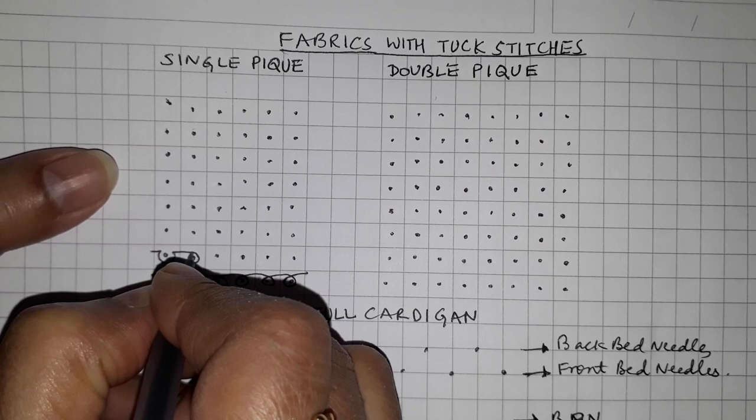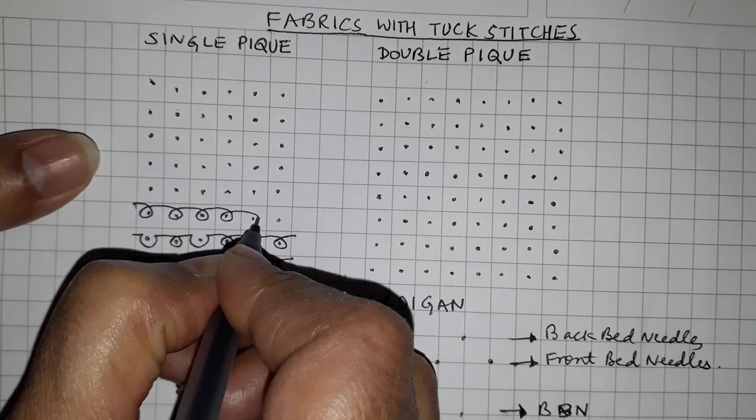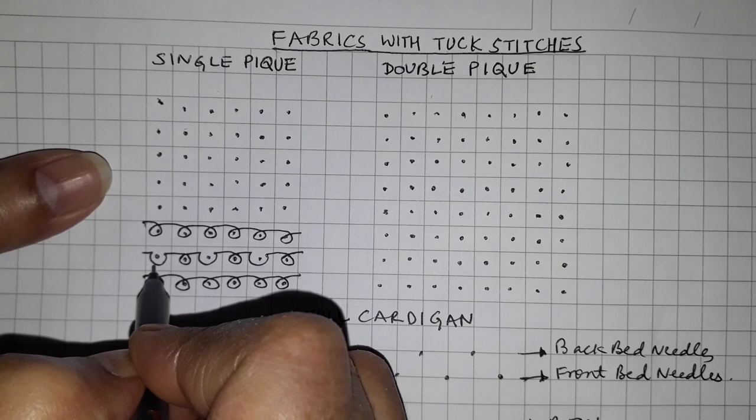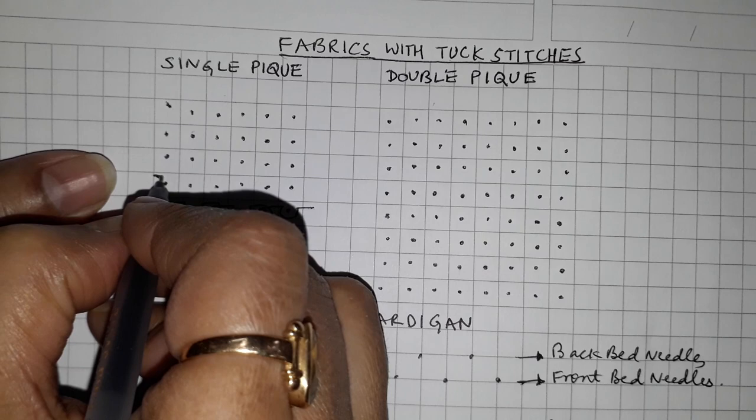The second course is tuck-knit-tuck. The next course can also be varied - you can do different kinds of designs by doing variations of these stitches. Here this was a tuck stitch in the first needle, so here you will make a knit stitch first and then tuck. Alternate the stitches. Again, one row of knit stitches.